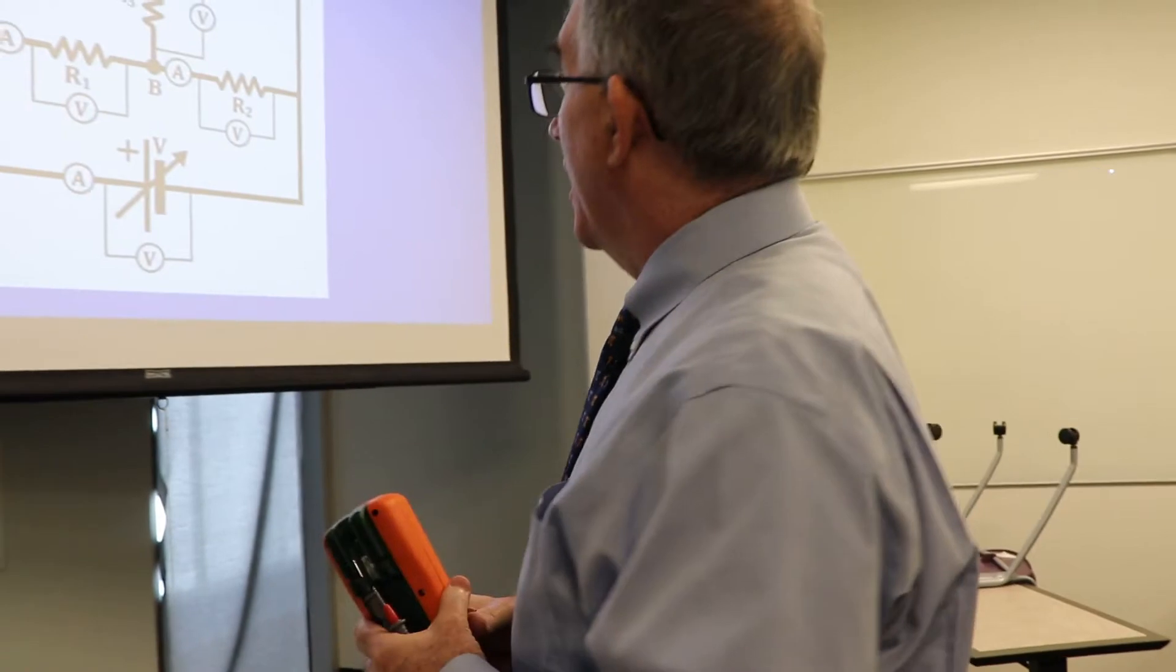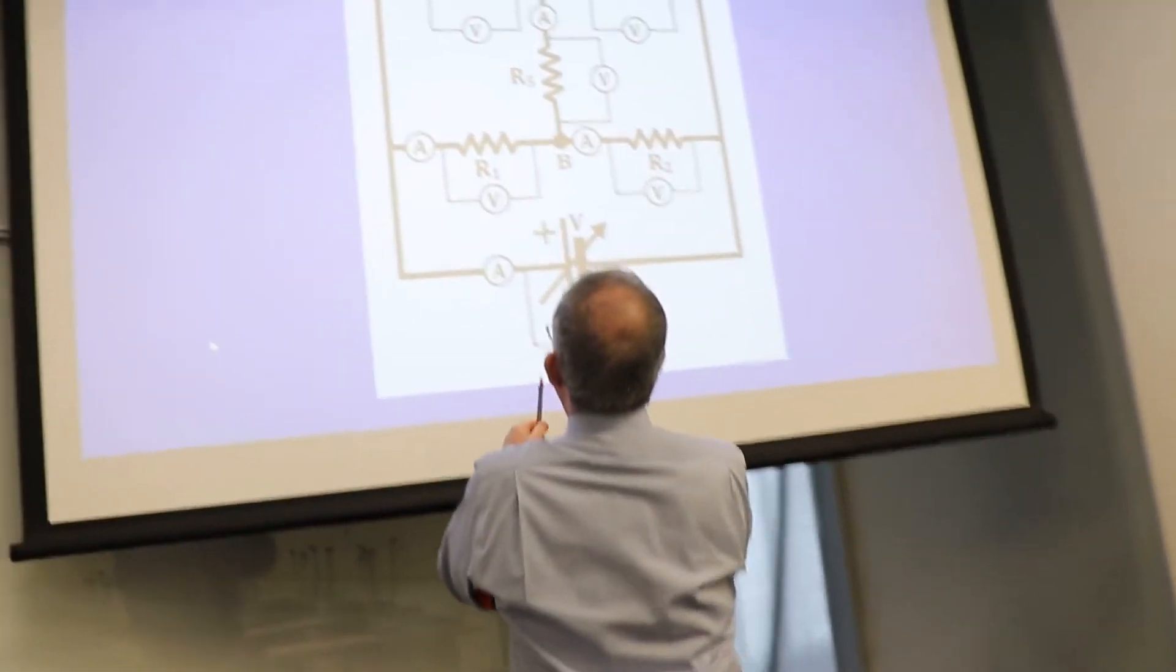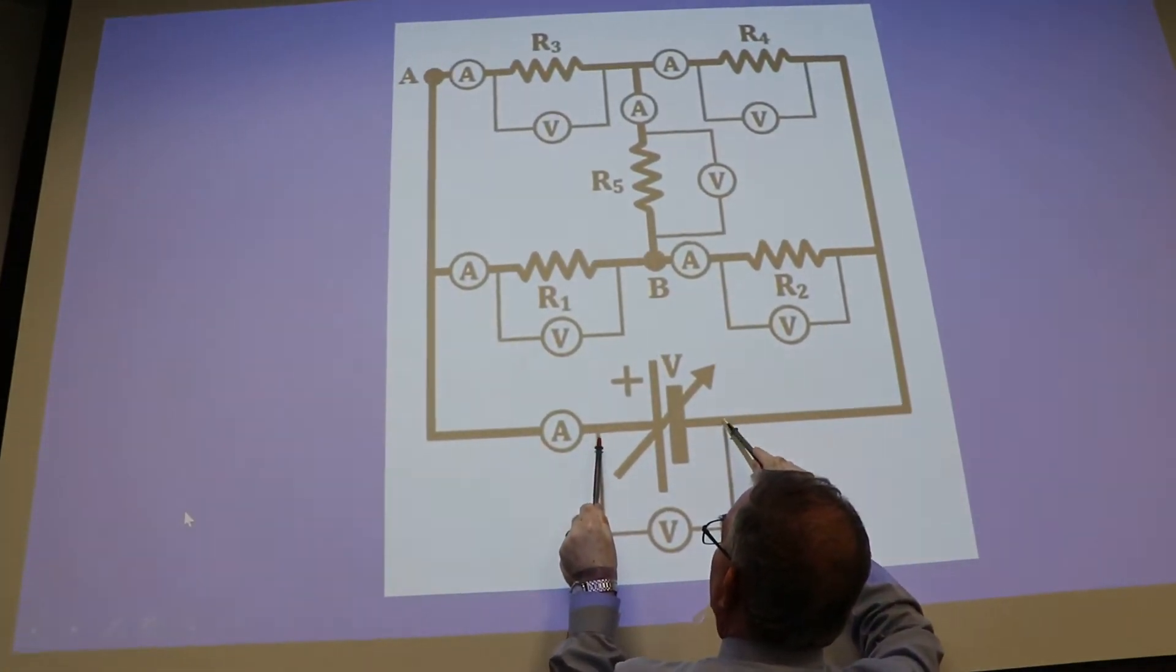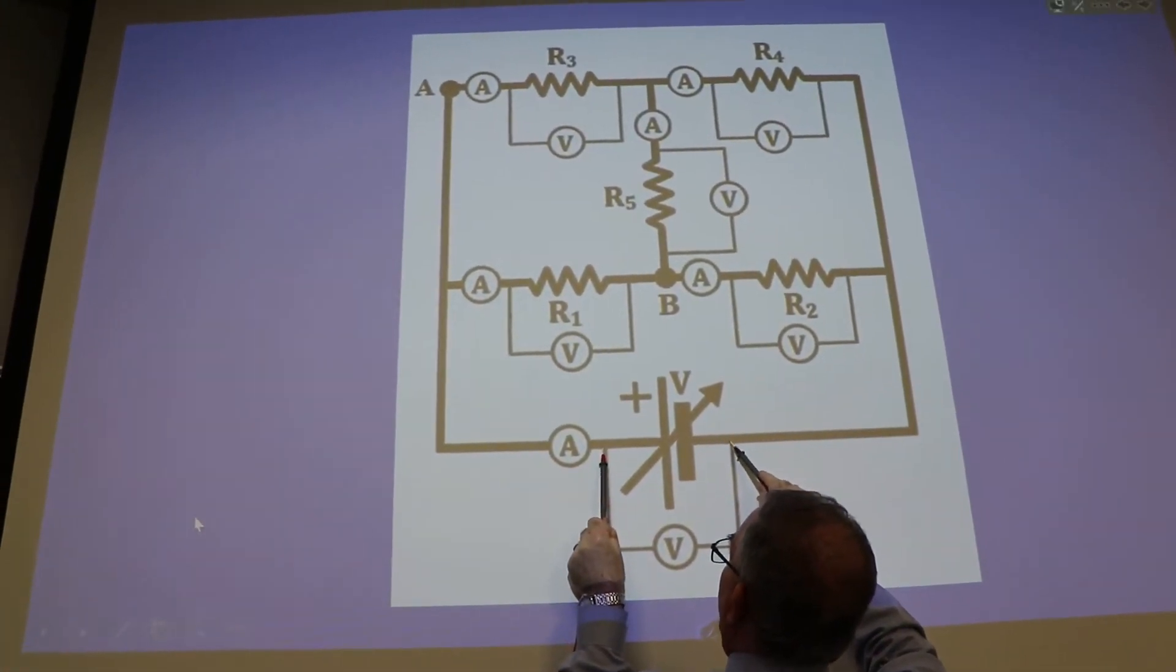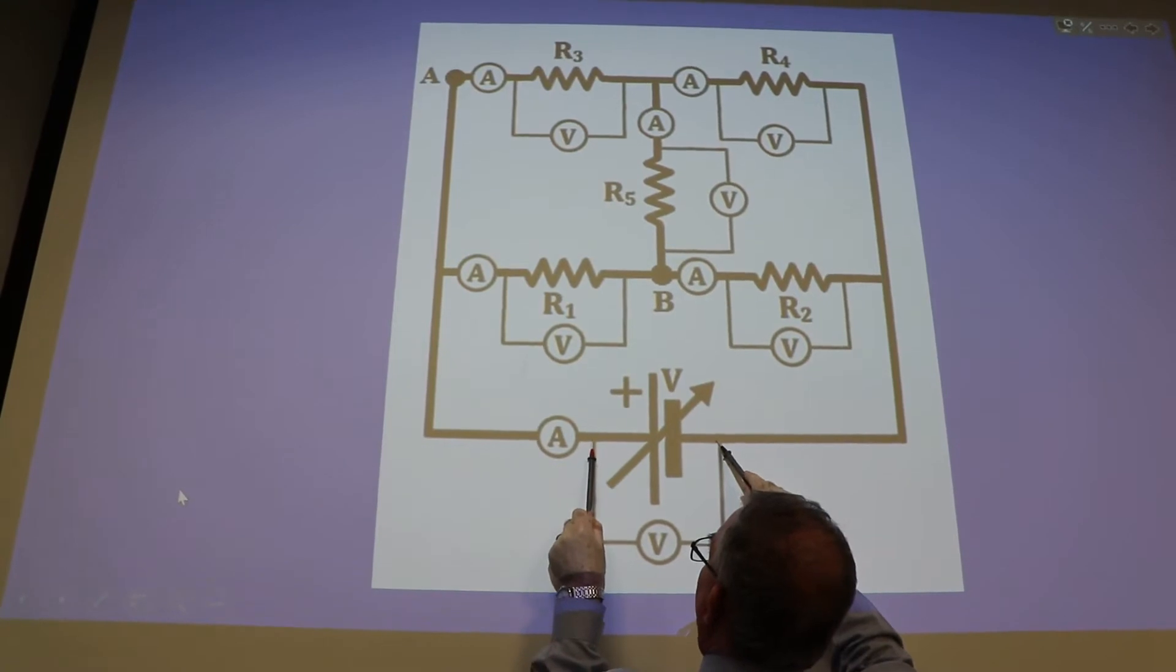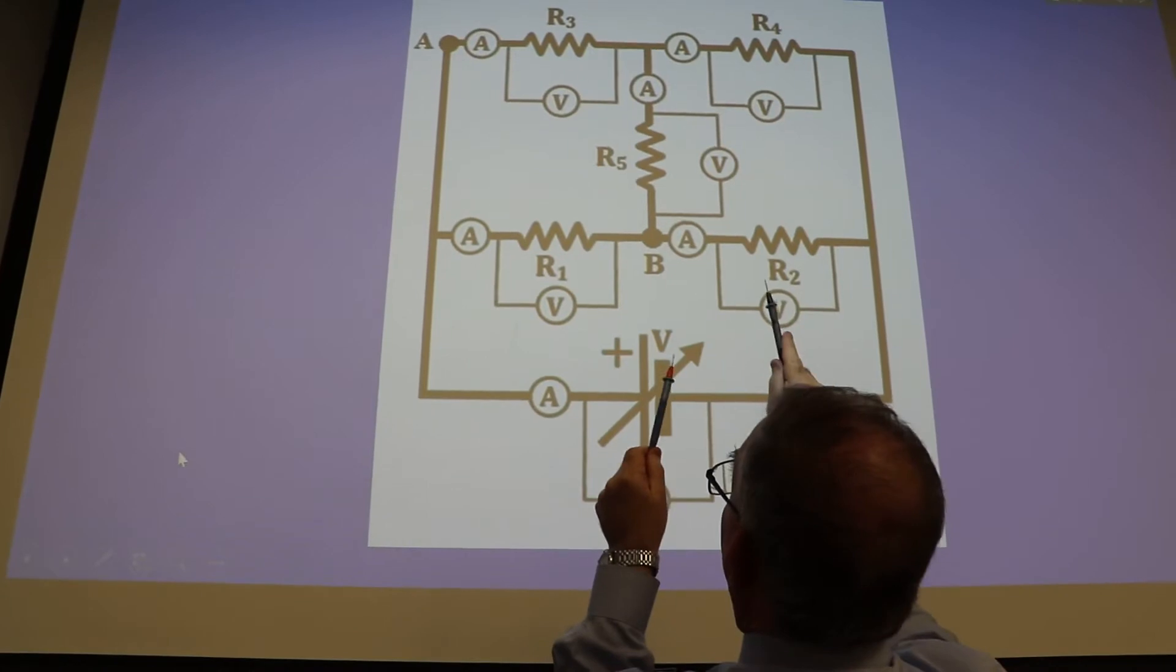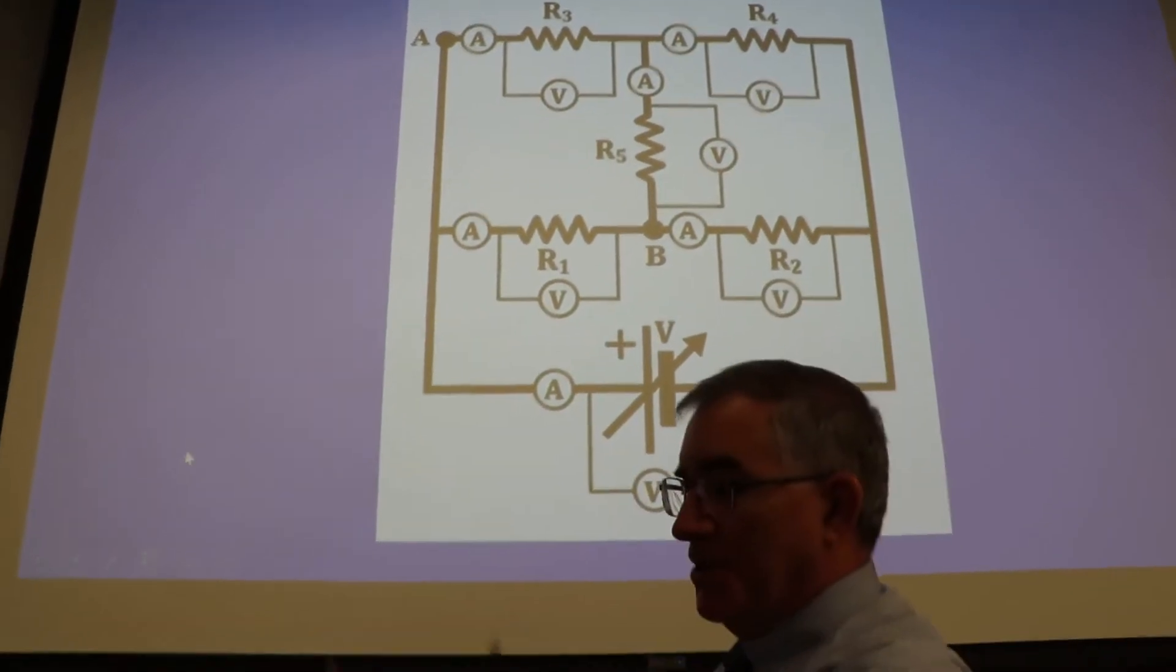These probes allow you to make voltage measurements quickly. You can see up there in the drawing, if I want to get the voltage, I would just go like right there, this side of the battery, that side of the battery, and I would get the voltage. And I would do the same thing across all those resistances in the circuit.